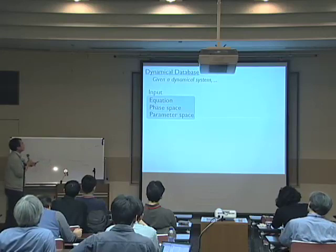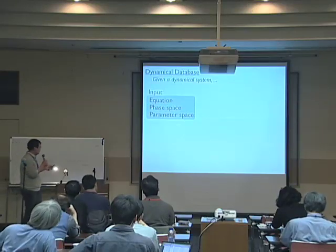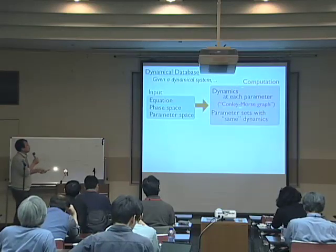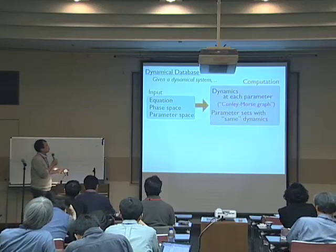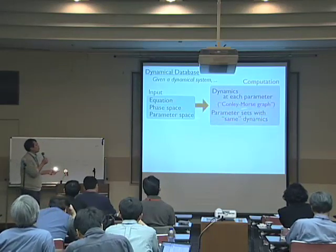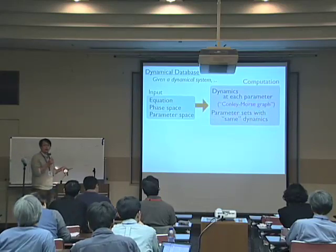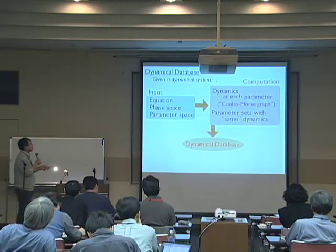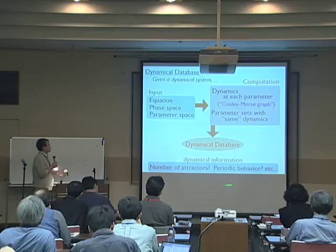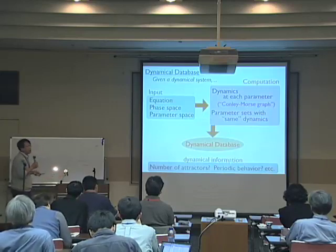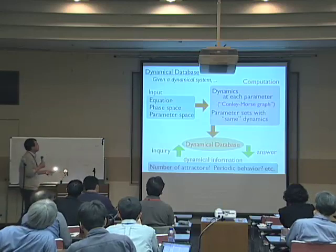So given a dynamical system, you have an expression of the equation, a domain phase space, and a parameter region. You take these as input, do the computation, and obtain the dynamics in terms of Conley-Morse graphs at each parameter, or at each parameter grid element. Then you compare the Conley-Morse graph between adjacent neighboring parameter decomposition elements to identify whether the corresponding Conley-Morse graphs are identical or not. Then you take those computation results into a database. You can then ask questions about the dynamics — for example, how many attractors you have, or what kind of periodic behavior you can see in this given dynamical system. You ask questions to the database and the database answers those questions, if possible. That's the basic idea of the dynamical database.